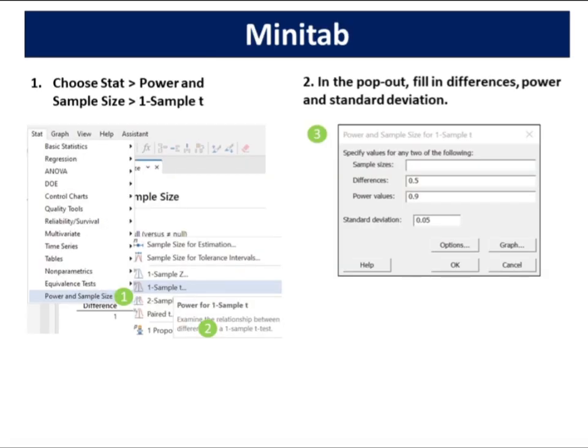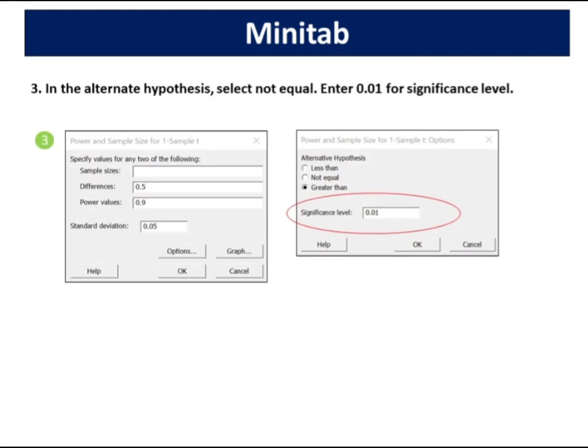The power is 0.9 and standard deviation is 0.05. Choose Stat, Power and Sample Size, One Sample T. In the pop-out, fill in differences, power and standard deviation. In the alternate hypothesis, select not equal. Enter 0.01 for significance level. Click OK.